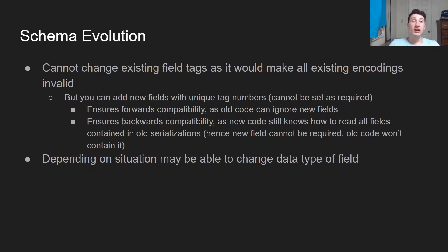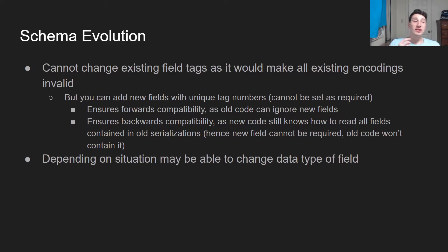So how does schema evolution work in both Protocol Buffers and Thrift? Everything is based around those field tags — field tags are what we use to identify which data corresponds to which field. You actually can't change existing field tags, but you can add new ones. Adding new fields with unique tag numbers ensures forward compatibility because old code can basically just ignore any new fields included in messages. It also ensures backwards compatibility because new code, since it still has those existing field tags from before, can read all the fields contained in old versions of messages.